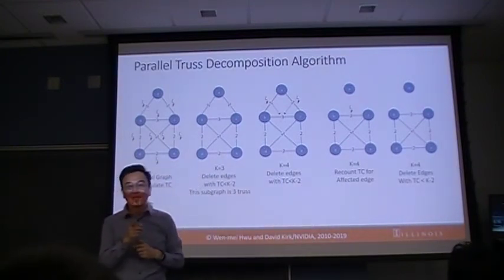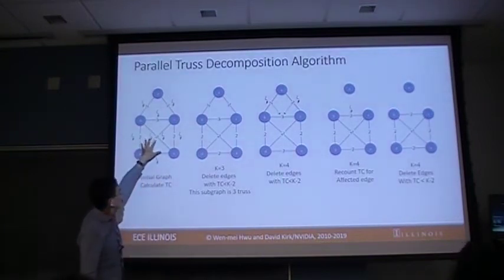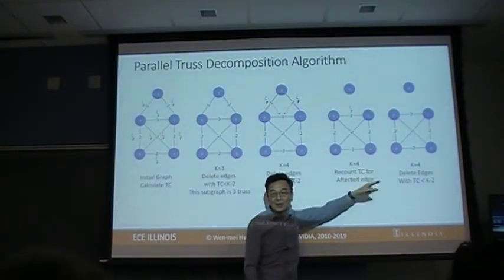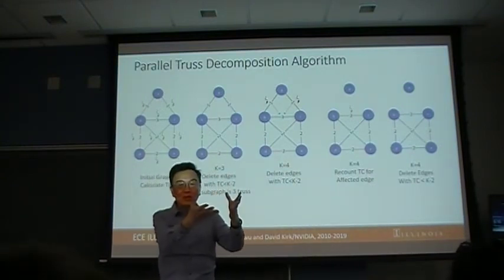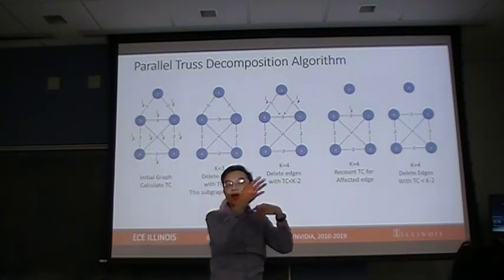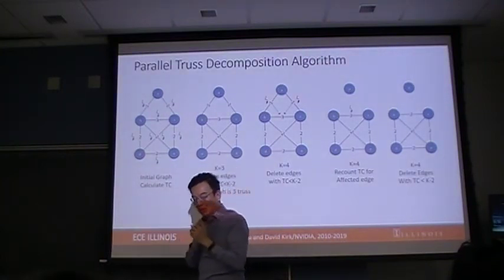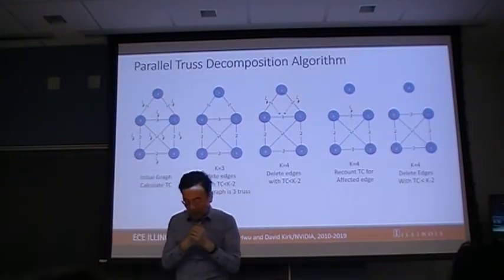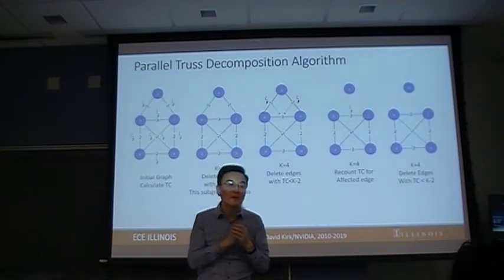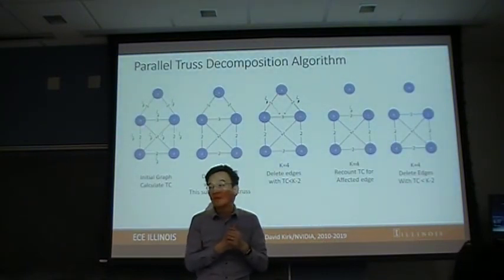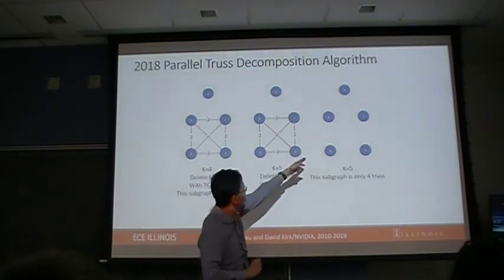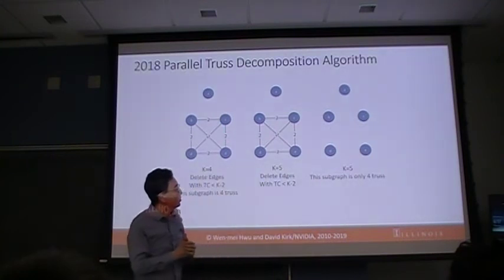This algorithm uses triangle counting very heavily. The first phase is triangle counting, and after eliminating edges, we still need to redo triangle counting. Sometimes people try to update triangle counts incrementally rather than fully recalculating — so there are incremental methods versus recalculation methods. This is probably the most widely used community detection algorithm in social media. When k equals five, you cannot find any more substructure, so the process ends.